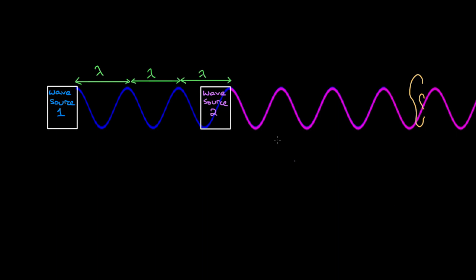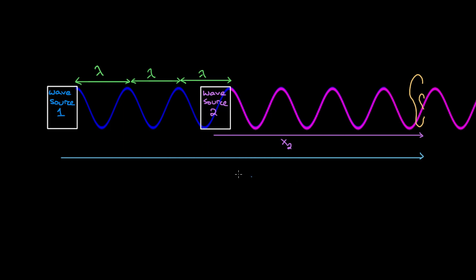Something useful is a formula for the path length difference. If I call x₂ the distance that wave source two has to travel to the detector, and x₁ the distance wave source one has to travel, then the path length difference delta x equals x₁ minus x₂. Given what we saw, if this path length difference is ever equal to an integer number of wavelengths — zero wavelengths, one wavelength, two wavelengths — it turns out any integer wavelength gives us constructive interference.